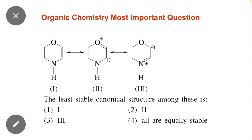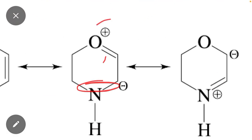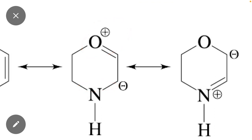The least electropositive atom should carry a positive charge. Here you can see that in structure number two, oxygen carries a positive charge. I already told you that if a more electronegative atom has a positive charge, it means that structure is the least stable.